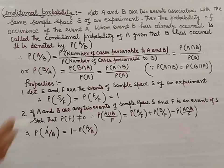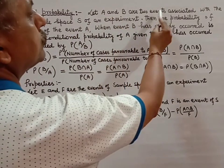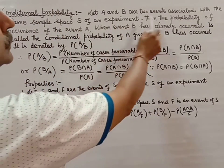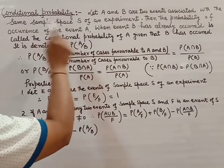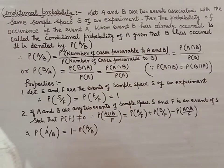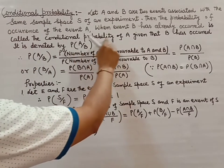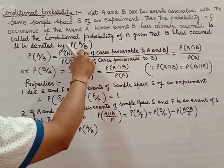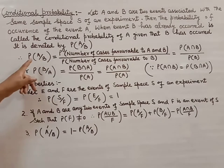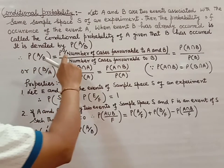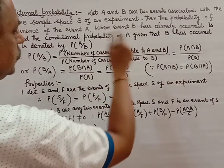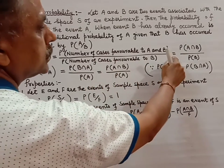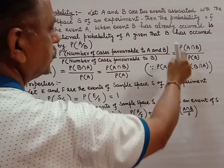Conditional probability. Let A and B be two events associated with the same sample space of an experiment. The probability of occurrence of event A, when event B has already occurred, is called the conditional probability of A given B, denoted as P(A|B). Therefore, P(A|B) is equal to the probability of A intersection B divided by the probability of B.